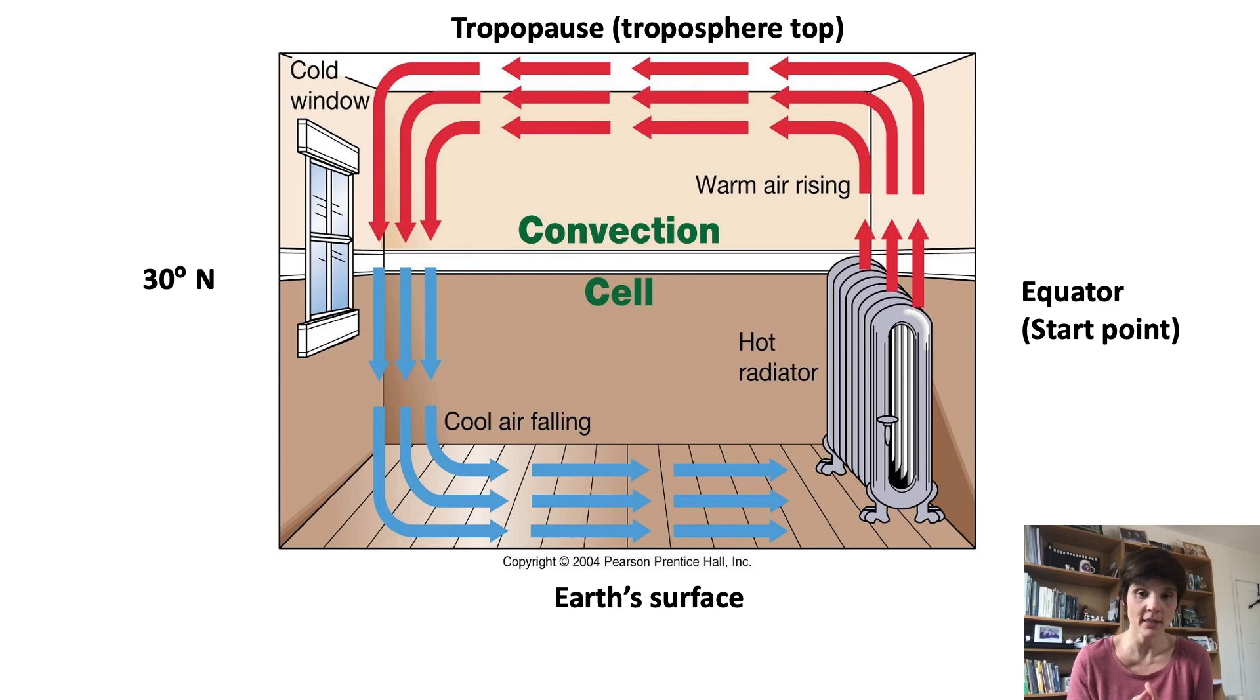A convection cell works like a room with a hot radiator and an open window. Imagine we are in the Hadley cell. The radiator is the equator and the heat makes the air at the Earth's surface lighter and it goes up to the upper part of the troposphere. When this air gets to the top, it moves in the only possible direction to the poles. So at 30 degrees of latitude, the temperature is getting cooler because this part of the planet doesn't receive as much solar radiation as the equator. This could be our open window bringing cool air into the room. So as the air is getting cooler, it is heavier and goes down again to the surface, returning to the equator to get warmer again.